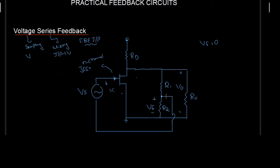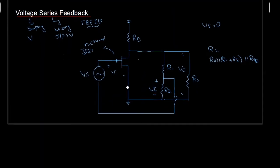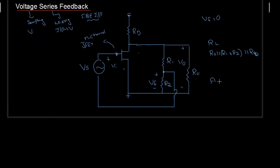With Vf assumed to be zero, the feedback connection is removed. In that case, R0 is parallel to R1 plus R2, and this Rd is also parallel to R0 because both are connected to ground. Let us call this combined resistance RL. The gain without feedback, denoted by A, will be equal to V0 by Vi, which equals minus gm·RL.